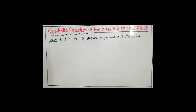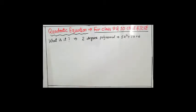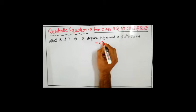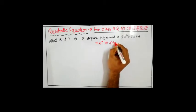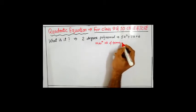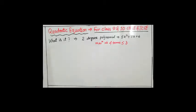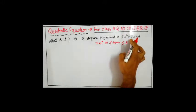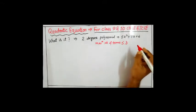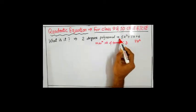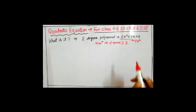For a second degree polynomial, the maximum number of terms must be less than or equal to 3 — not more than 3, but it can be equal to 3, or it can be a single term polynomial also, like 7x². That is also a second degree polynomial which has only one term.